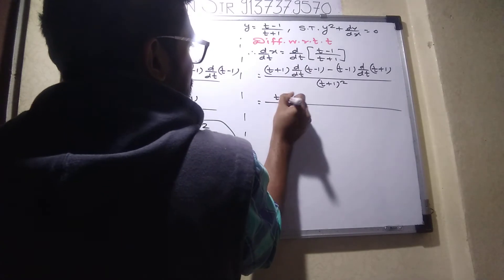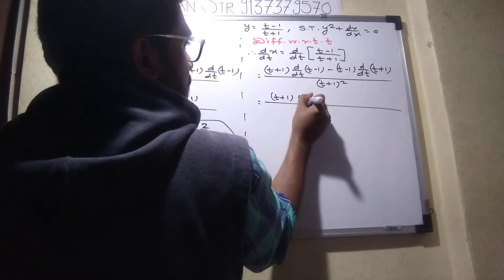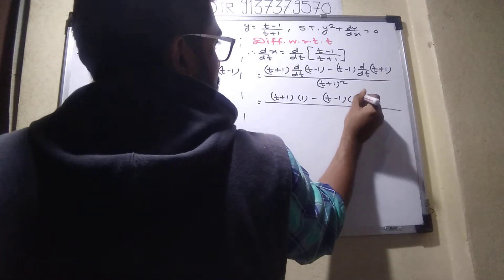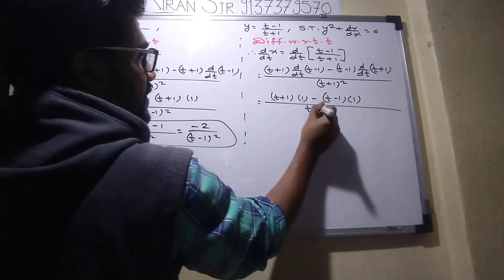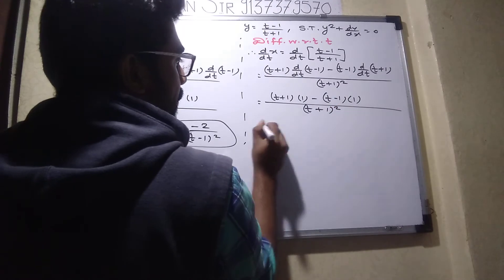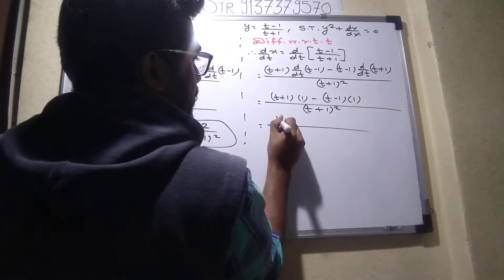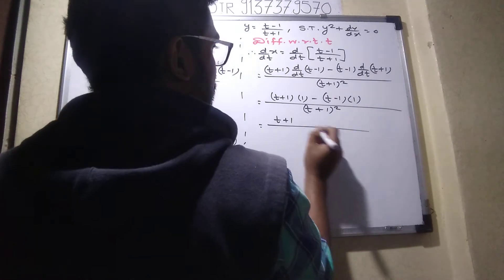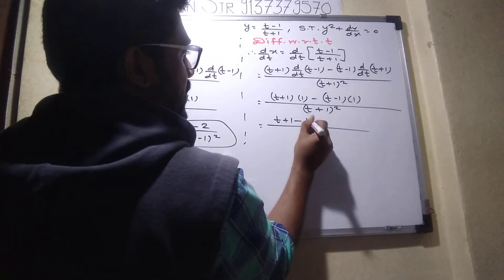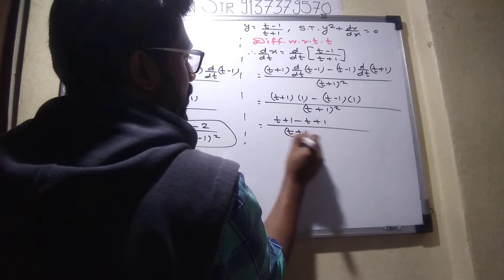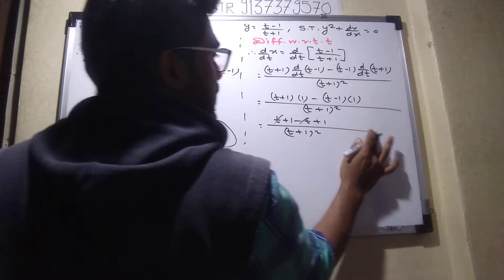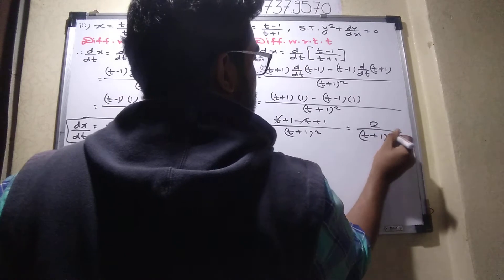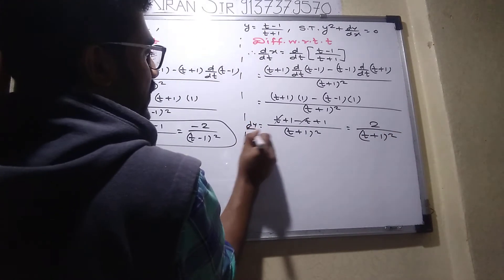The answer is: t plus 1, derivative of t is 1, derivative of 1 is 0. Derivative of t is 1. So let me simplify: t plus 1, then minus t minus minus plus 1 upon t plus 1 the whole square. This is the value of dy by dt.